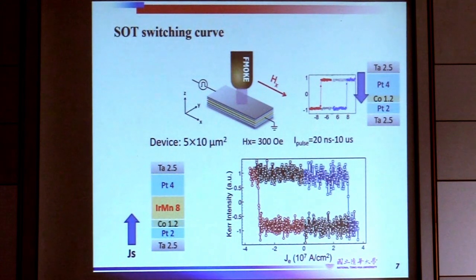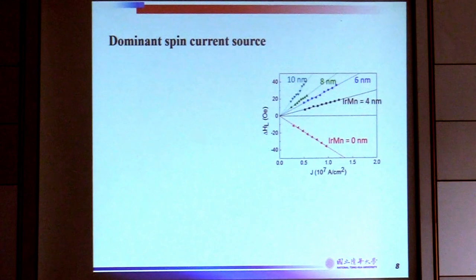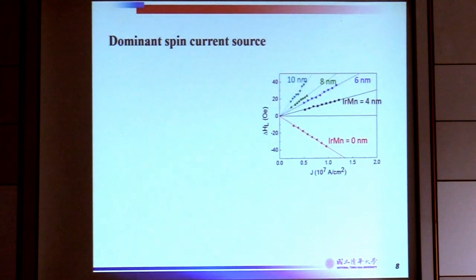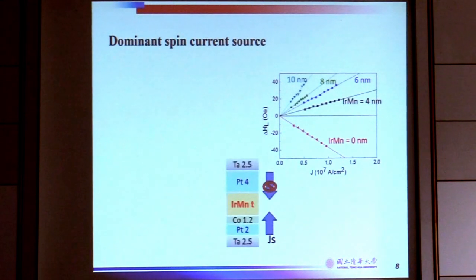We would like to understand how IrMn affects the spin current, so we changed the thickness of IrMn. We can see that with increasing IrMn thickness to 4 nanometers, we start to see a sign change for the effective field. Without IrMn, the spin current comes from the top platinum; but with increasing IrMn thickness, the spin current from the bottom platinum becomes more significant. So it appears that the IrMn itself is blocking the spin current from the top platinum.